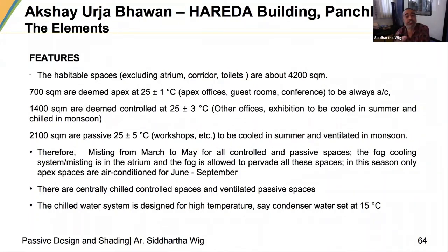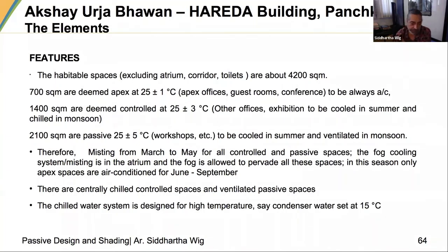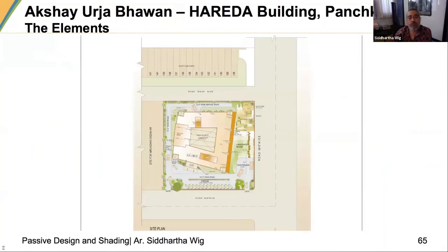This made our strategies much easier and more focused. We were looking at fogging inside the courtyard from March to May. There were centrally-chilled controlled spaces and ventilated passive spaces, so moving from a less conditioned to a more conditioned area would not cause thermal shock. We also designed the chilled water system to be set at a much higher temperature — 15°C was suggested. We looked at earth coupling for water but it turned out too expensive and we had to forgo it.